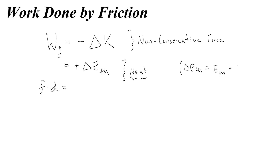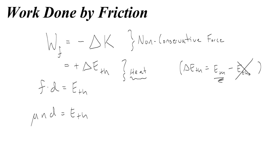You could write delta E_TH as the heat at the end minus the heat in the beginning. Usually I'll just pretend that there's no heat in the beginning, so instead of writing delta E_TH, I'll just write E_TH and use it as an energy analysis tool. The other thing we can do with friction is replace it with mu times the normal force. So mu times normal force times distance is going to tell us the amount of energy that we lost.